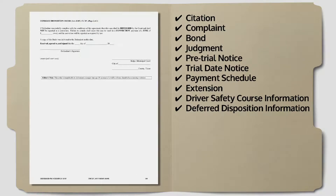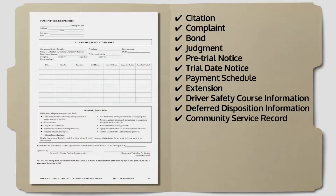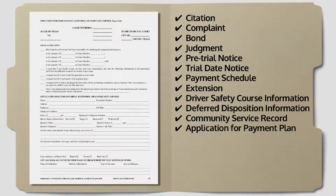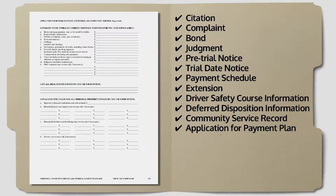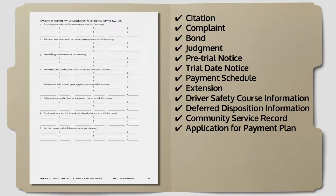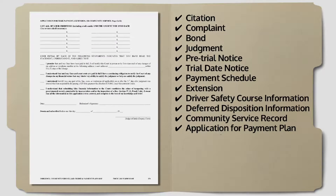Those documents should include the show-cause hearing dates. If the defendant has been granted an opportunity to do community service, there should be a court order inclusive of where the defendant is going to do community service, how many hours they are going to do per week, what agency is going to supervise that community service, and the due date for the defendant to bring back the documentation to the court. If the defendant is granted a payment plan, then a court order for the payment plan with due dates and the amount to be paid needs to be incorporated into the case file.